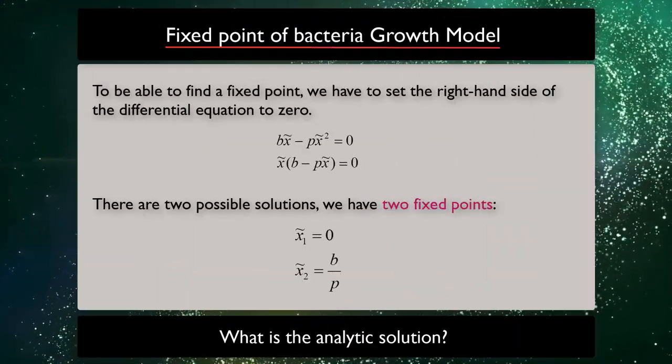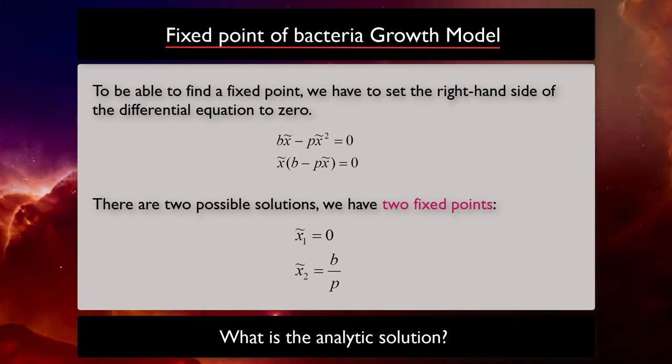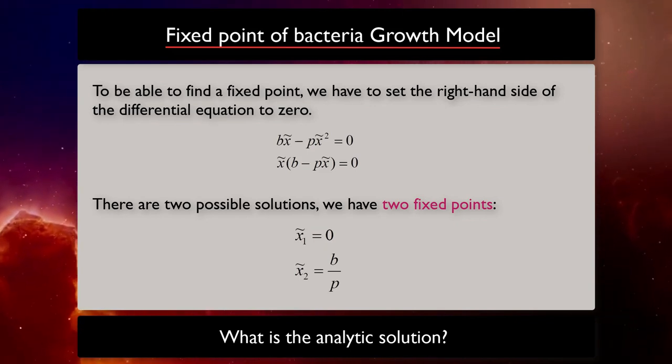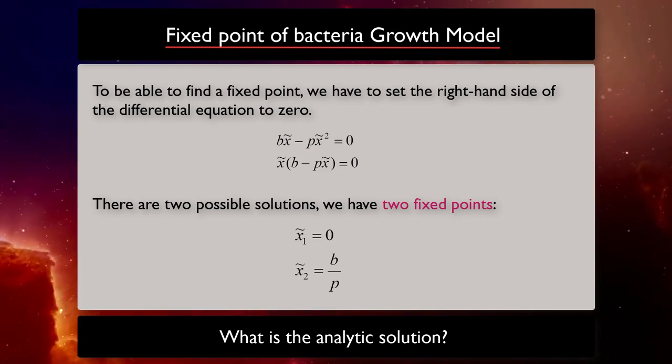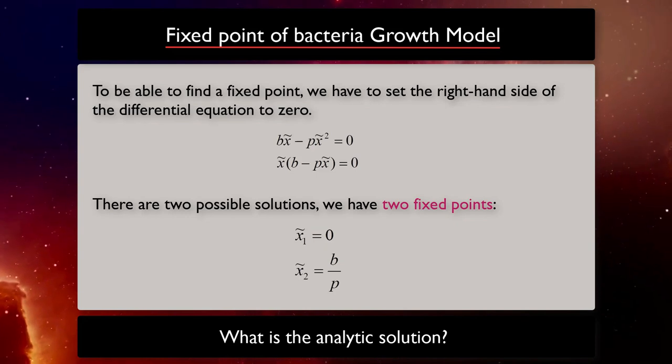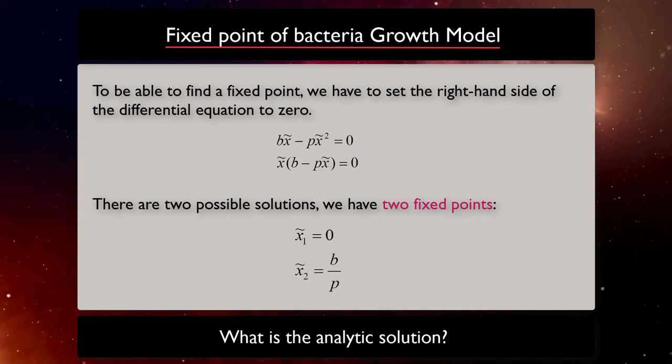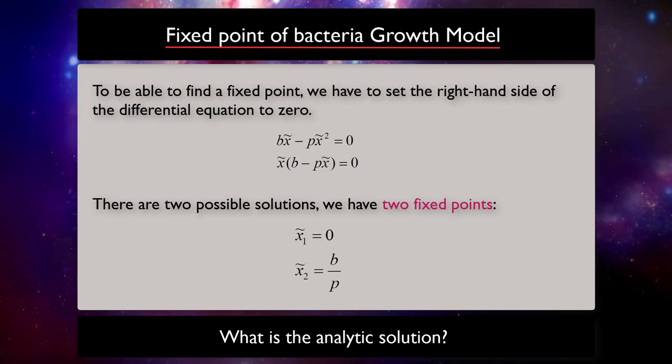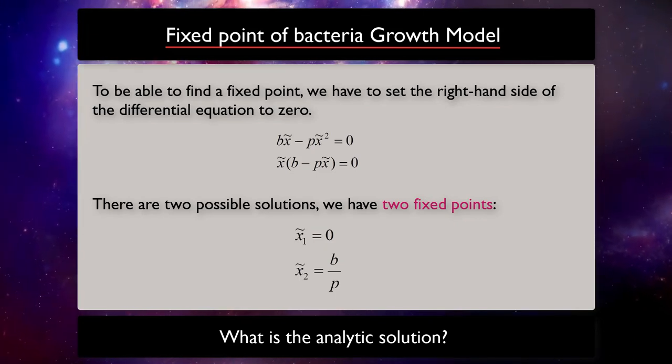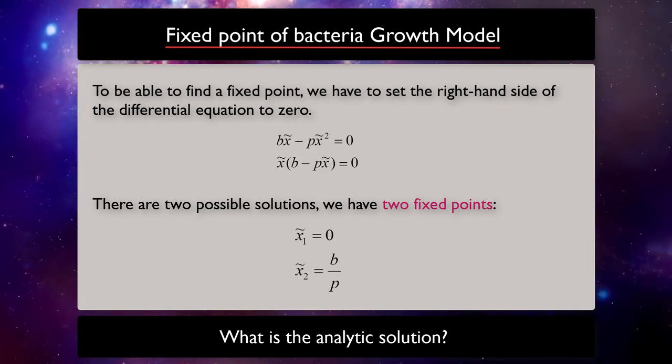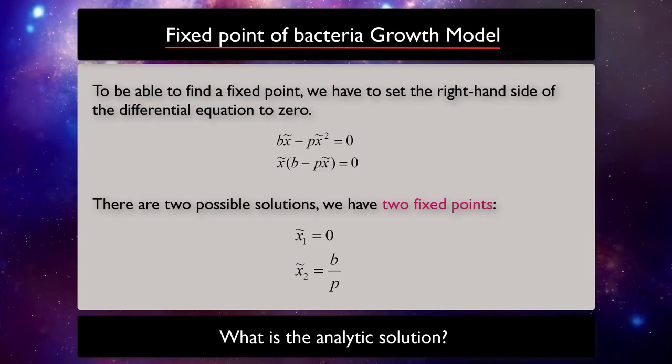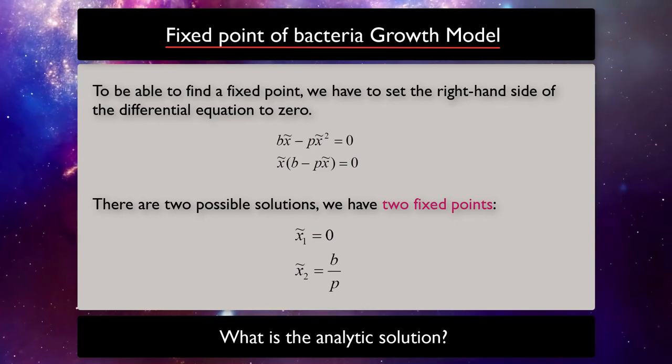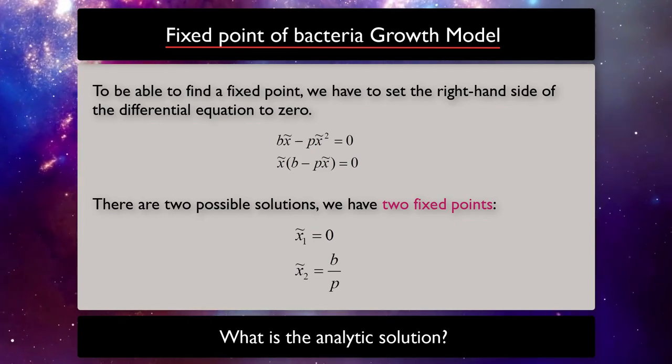Next, we want to find the fixed point of the system. And to be able to find a fixed point, we have to set the right-hand side of differential equation to 0. If we do that, then we will find out that there are two possible solutions. So we have two fixed points. First one, x1 equal to 0, and the second one is x2 equal to b over p. Now, let's see what they mean and we also check their stability.